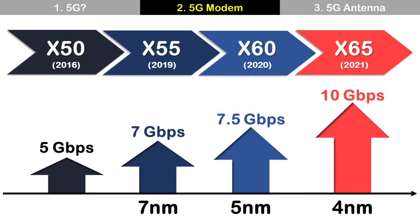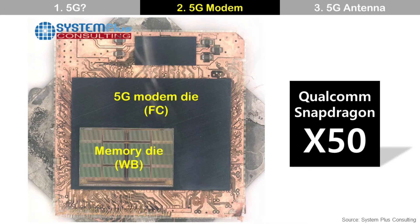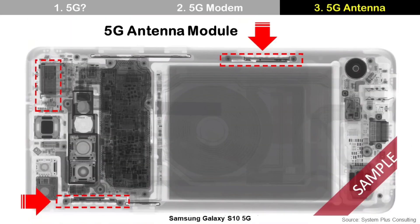They also used more advanced silicon nodes like 7nm, 5nm, and 4nm, which allows more complex chips with a similar size and less power consumption — very important for battery-powered devices like smartphones. If you check inside a smartphone like an Apple iPhone, you can find the 5G modem. Typically, the modem package has a two-die stack structure with a bottom modem die and a top memory die. The modem die is more complex, so it uses flip-chip package technology, while the memory die uses wire bonding.